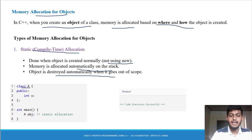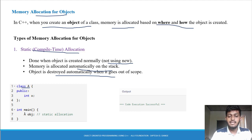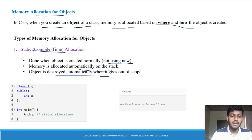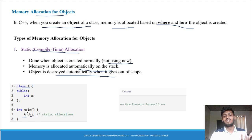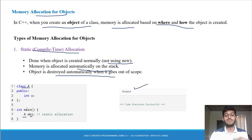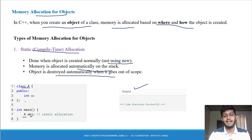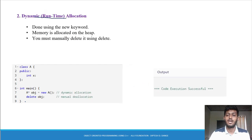देखो, हमारा class है, इसमें मैंने एक variable x किया है और वो public है. तो main method के अंदर यह object create करते हैं — यह हमारा class है और उसका object create किया, obj नाम से. So this is your static allocation. इसका output कुछ नहीं आ रहा है क्योंकि मैंने program में कुछ किया नहीं — बस आपको show कर रहा हूँ static allocation होता क्या है. Next video में हम इसको run करके देख लेंगे.